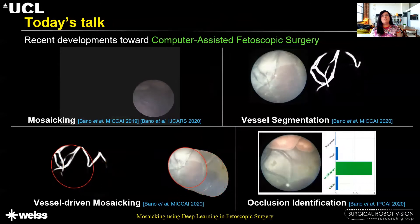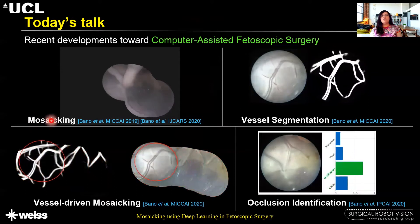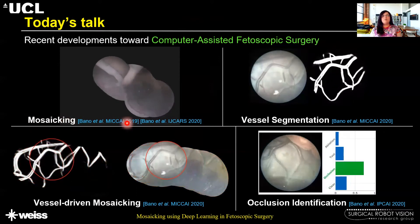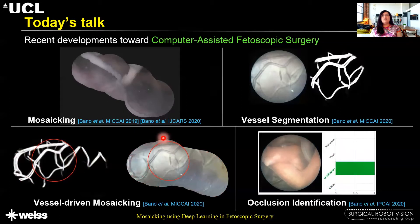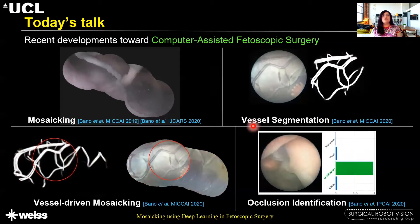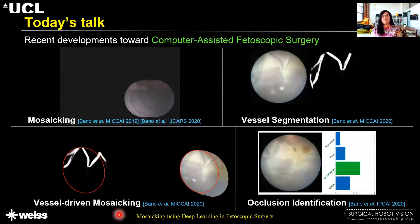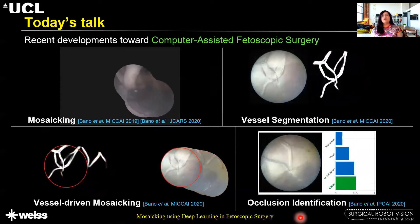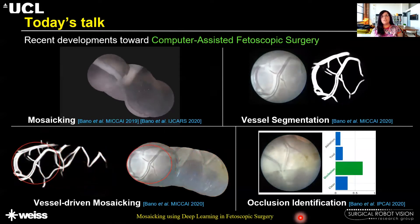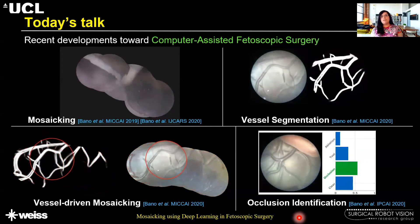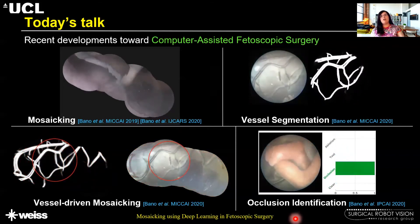Today's talk covers recent developments towards computer-assisted fetoscopic surgery. I'll be discussing the deep sequential mosaic approach presented at MICCAI last year and its extended version recently accepted at IJCARS. I'll then present recent work on vessel segmentation and vessel-driven mosaicing accepted at MICCAI 2020, followed by an occlusion identification approach presented at IPCAI this year, which identifies sequences with clear views to drive mosaicing algorithms.